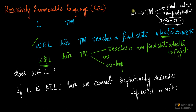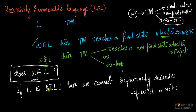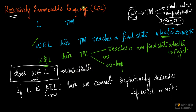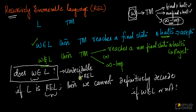Given any W, can I decide whether the word belongs to the language? If the language is recursively enumerable, for some words I reach a final state and halt, for some I reach a non-final state and halt — for those I can decide. But there will still be some words for which I get into an infinite loop and cannot say.